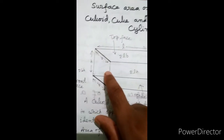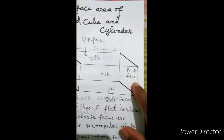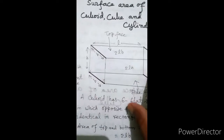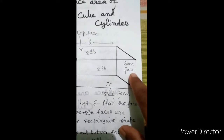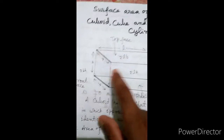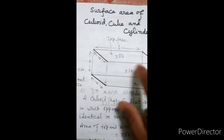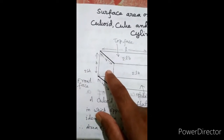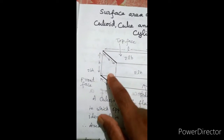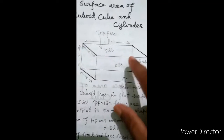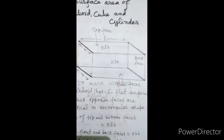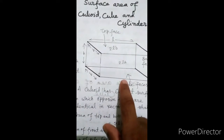This is the front face and one face is the back face. Both faces are identical. The area of each is BH, so the total area of both these parts is BH plus BH. This side face also has one identical opposite side face.